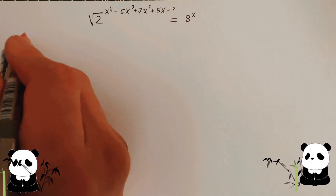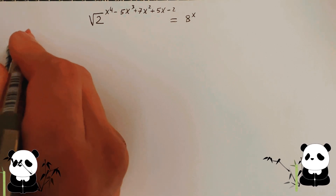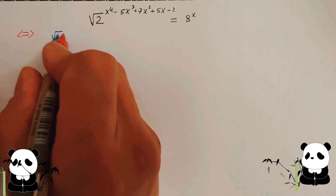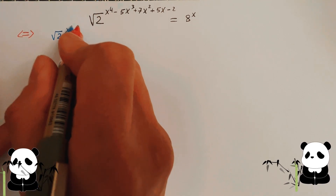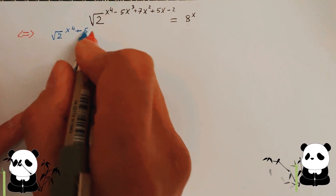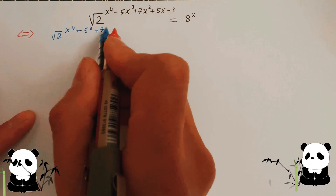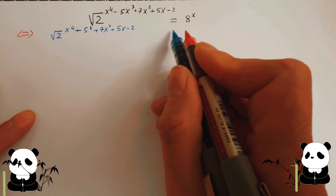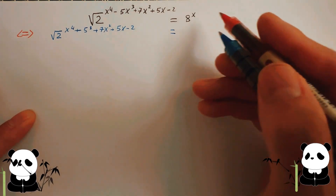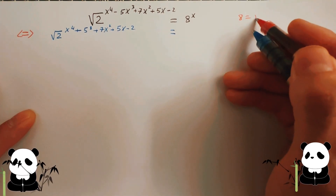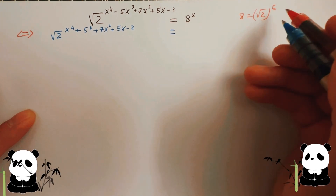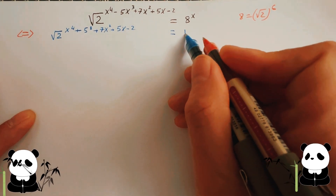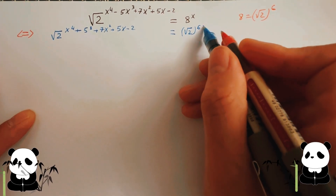First, I rearrange this equation into a simpler form. On the left hand side I have x to the power four, take away five x cubed, plus seven x squared, plus five x, take away two. On the right hand side, you can rearrange it as square root of two to the power six. So the right hand side becomes square root two to the power 6x.